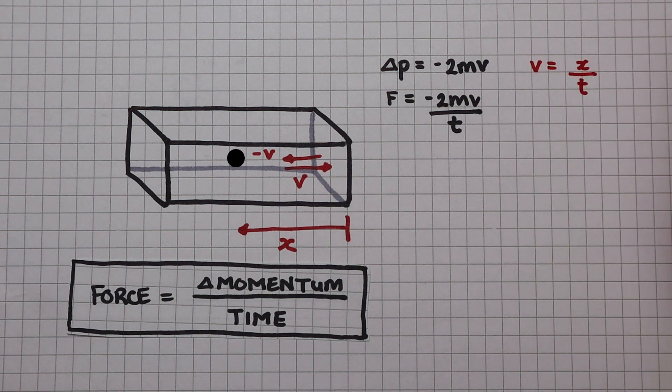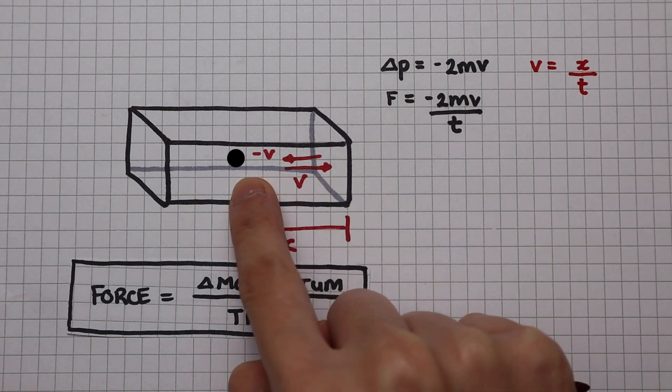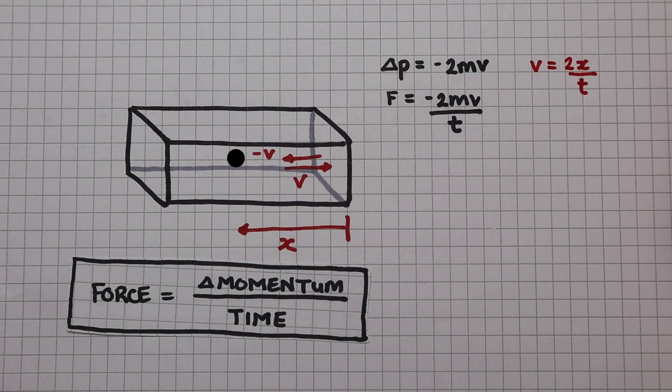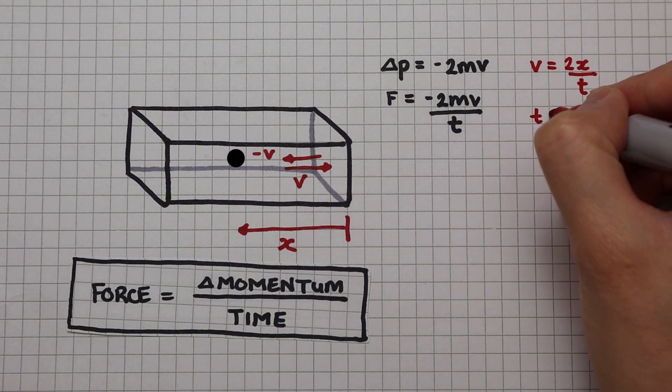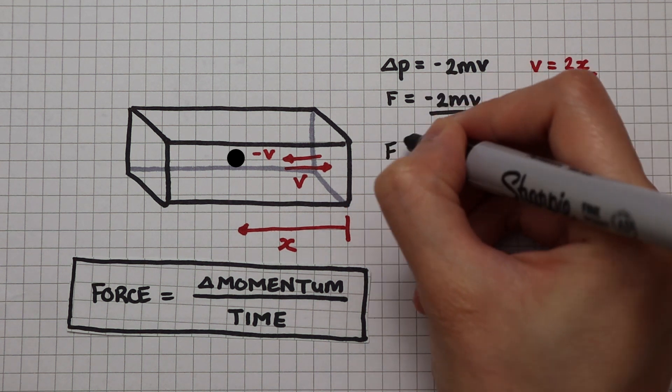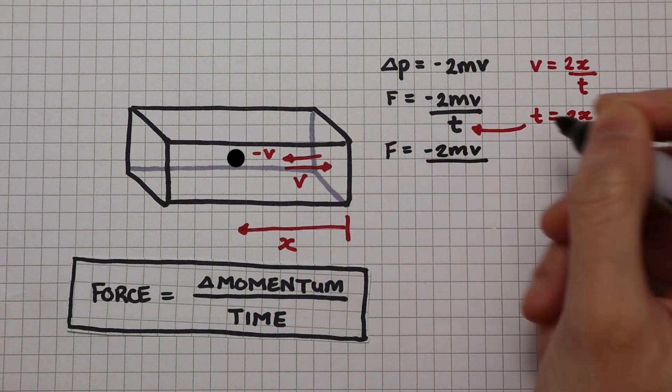Speed is distance divided by time. If the particle has traveled there and back, the distance is 2x. I can now rearrange this to get t as the subject and substitute this back into our equation. We get minus 2mv divided by this.